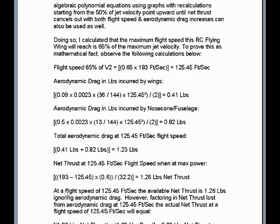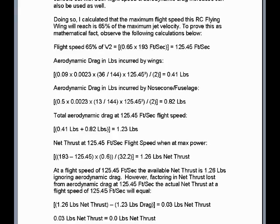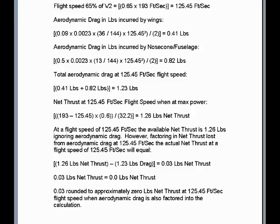However, factoring in net thrust lost from aerodynamic drag at 125.45 feet per second, the actual net thrust will equal 1.26 pounds net thrust minus 1.23 pounds drag, to equal approximately 0.03 pounds net thrust — rounded to approximately 0 pounds net thrust at 125.45 feet per second flight speed when aerodynamic drag is also factored into the calculation.